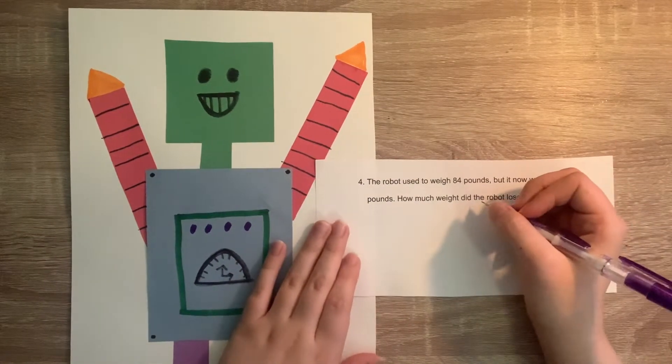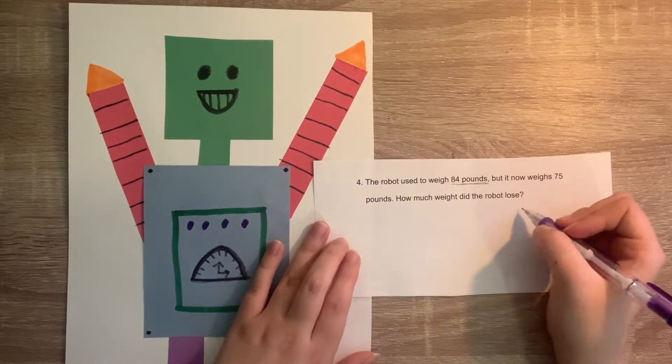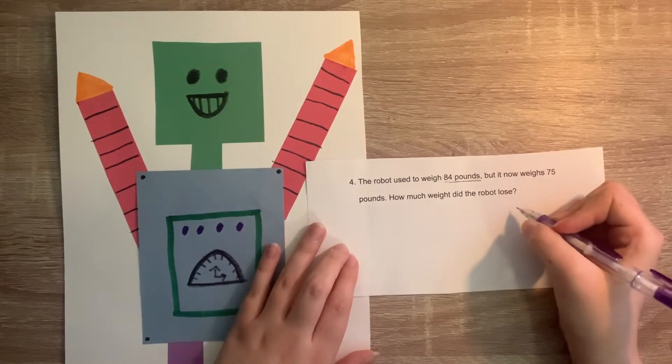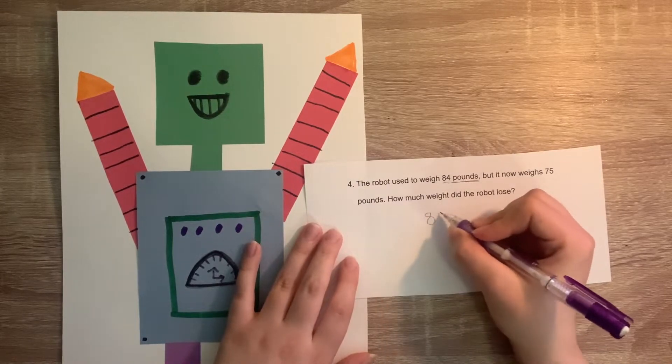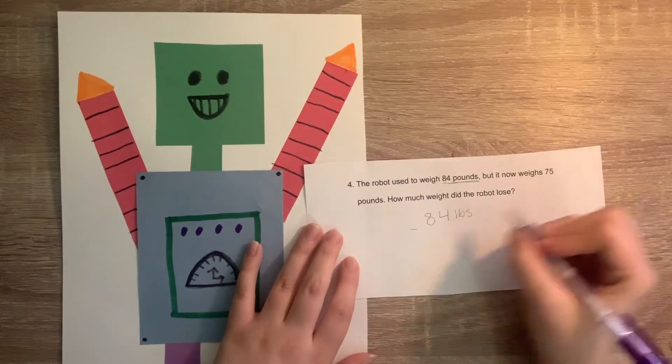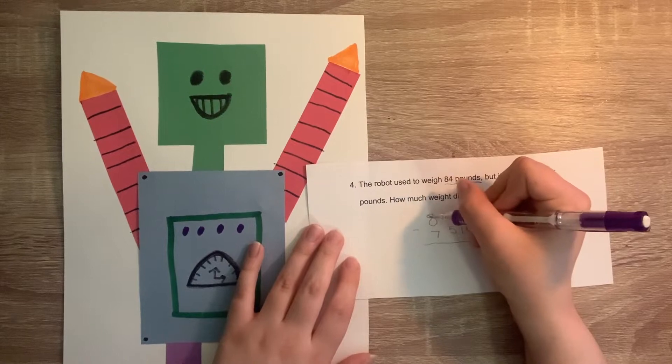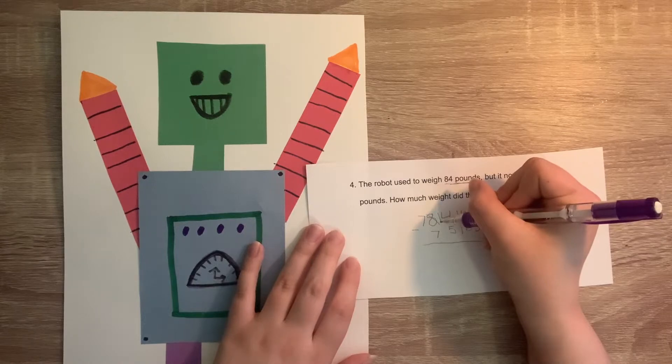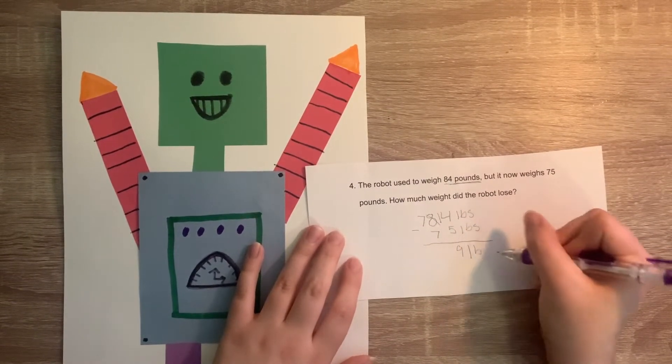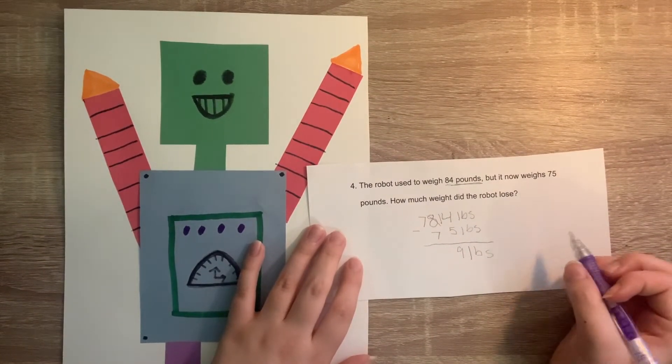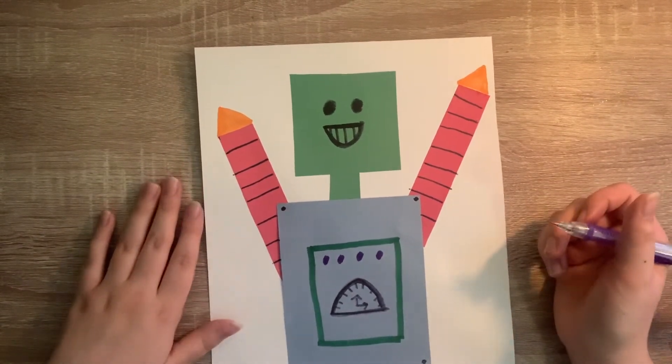Our last question says the robot used to weigh 84 pounds but it now weighs 75 pounds. How much did the robot lose? This is a tricky one. But we know that it's a subtraction problem because we have to determine how much the robot lost. So we are going to do the bigger number, 84 pounds, minus the smaller number, 75 pounds. We can't subtract 5 from 4. So we are going to borrow from this side. 14 minus 5 is 9. And 7 minus 7 is 0. Which means our answer is 9 pounds. The robot lost 9 pounds, which is how it went from 84 pounds to 75 pounds.